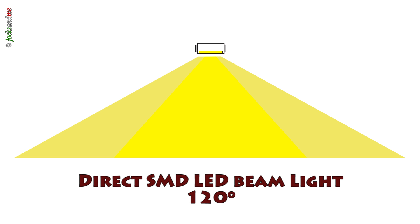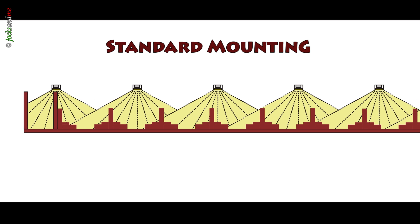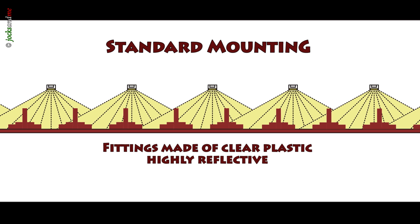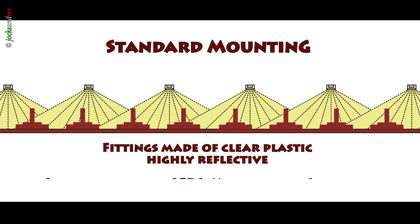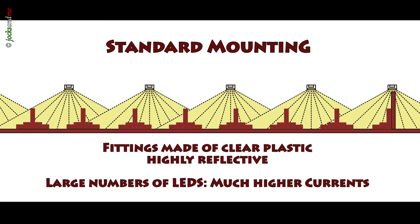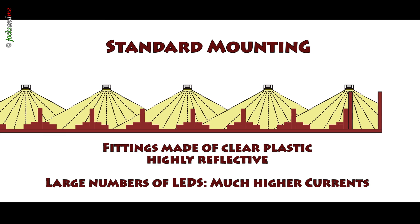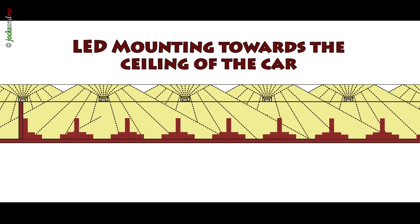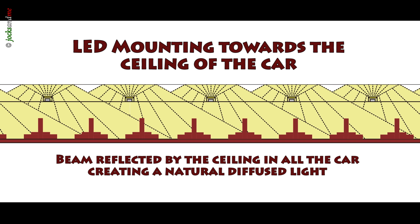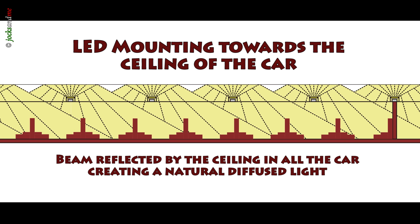If we analyze the specs of the SMD LEDs, normally they have an aperture of 120 degrees of light, and by experience the light in the middle is much stronger. If they are mounted normally towards the fittings of the car, as the car is made of plastic, you will get a very high reflection from the plastic, which will make an even lighting — though a large number of LEDs will result in much higher currents. In opposition, if you mount them towards the ceiling of the car and fit the ceiling with very white paper, you would get a very natural and diffused light throughout the car, minimizing the number of LEDs and thus the current consumption.